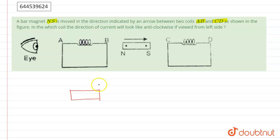So it wants to attract it. So the end of B works as a south and end A works as a north. So that is coil A and B.